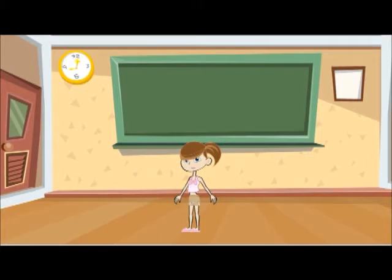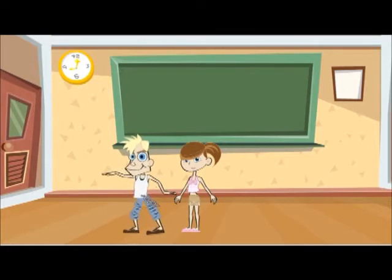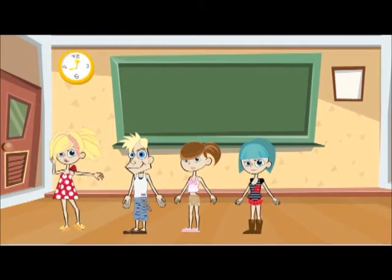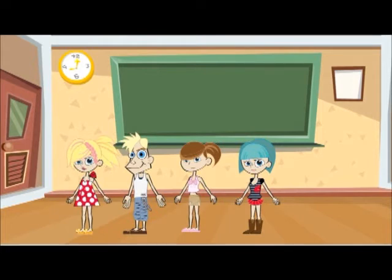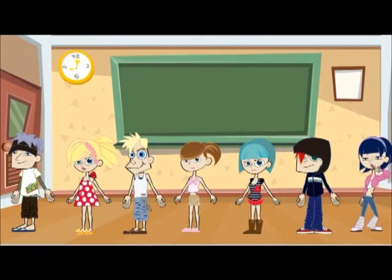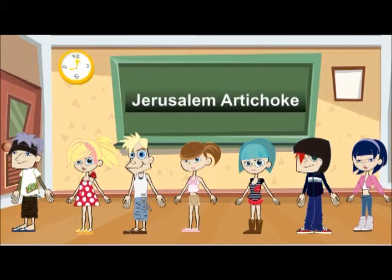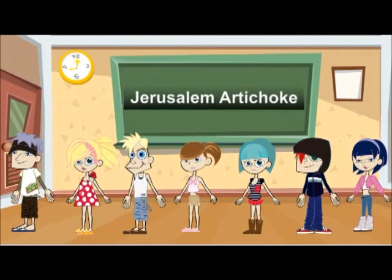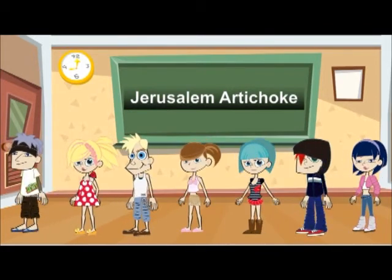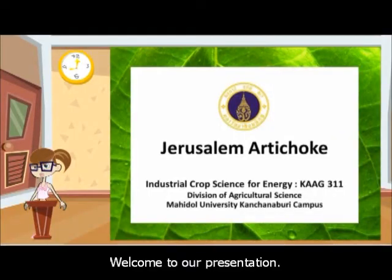Hello, ladies and gentlemen. Let me introduce myself and my group. My name is A-Ri-Rot. His name is Pooh-Mate. Her name is Saucy-Torn. Her name is Saucy-Pa-Paar. His name is Willard. His name is Pa-Nut. And her name is Meena. Today, we are presenting about Jerusalem Artichoke. Welcome to our presentation.